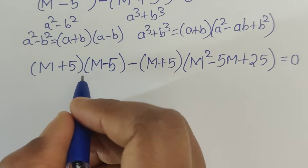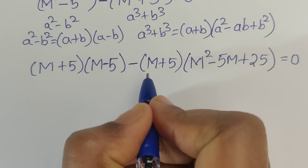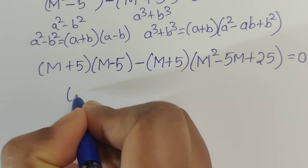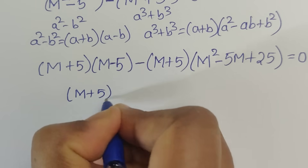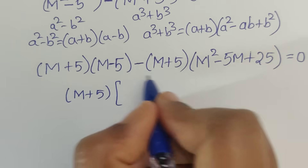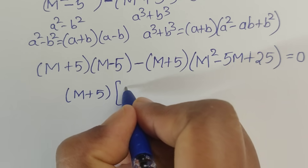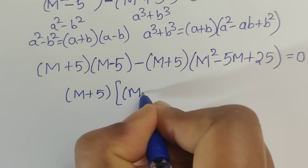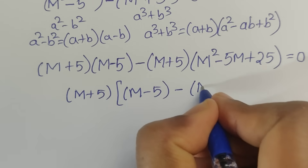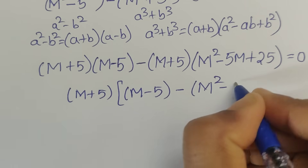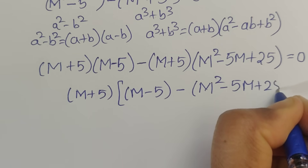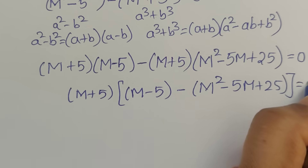So now see here in these two terms we have common factor that is m plus 5. So we can take out common. m plus 5. Close the bracket. Now here we will write the leftover numbers that are m, m minus 5 minus m squared minus m plus 25. Close the bracket equals 0.